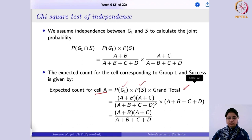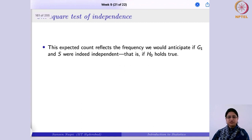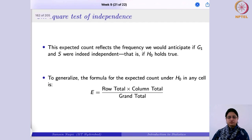The first term is the product of the two marginal probabilities and the second is the grand total. So what you are left with is: expected count = (row total × column total) / grand total. This expected count reflects the frequency we would anticipate if the two events G1 and S were indeed independent. To generalize: for each cell, multiply the corresponding row total by the column total and divide by the grand total.